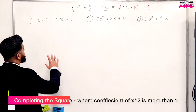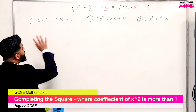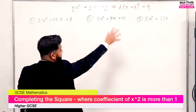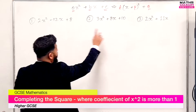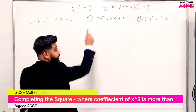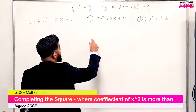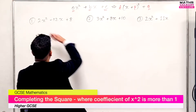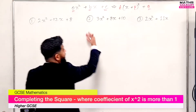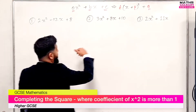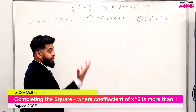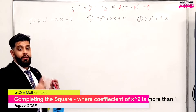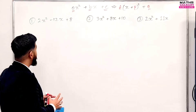So in this lesson, I'm going to show you how to complete the square for these types of examples where the coefficient — the number in front of x squared — is more than 1. So you could have like a 2 or 3 or whatever number, it could be anything. And these are the three examples that I will show you the method on.